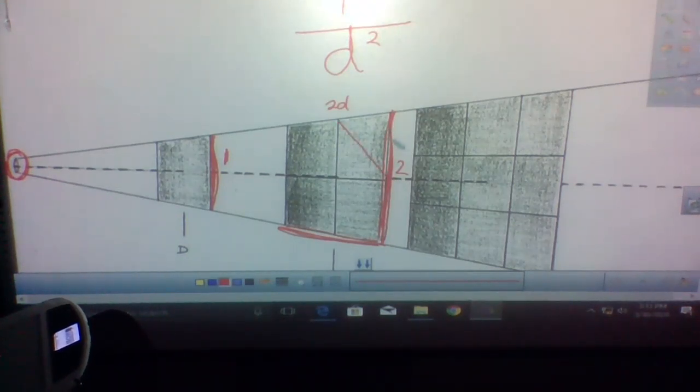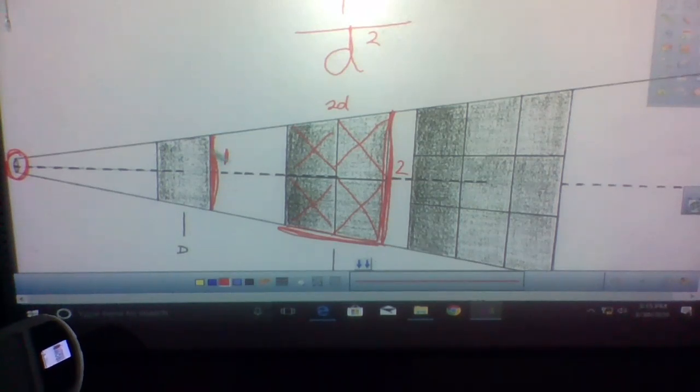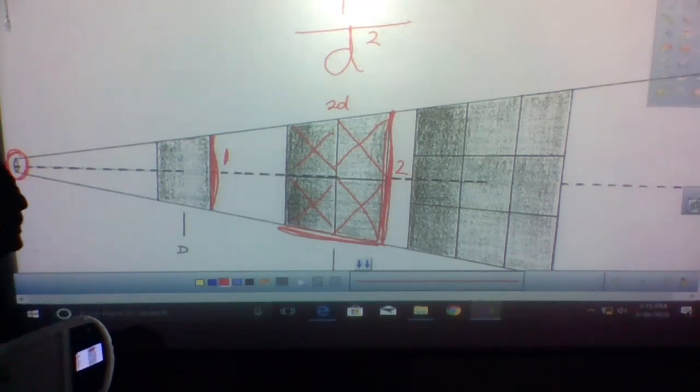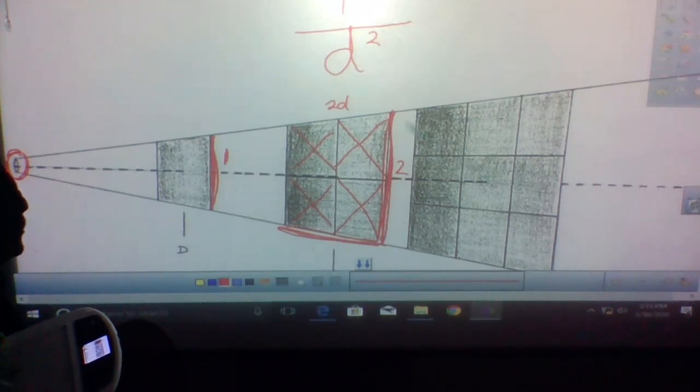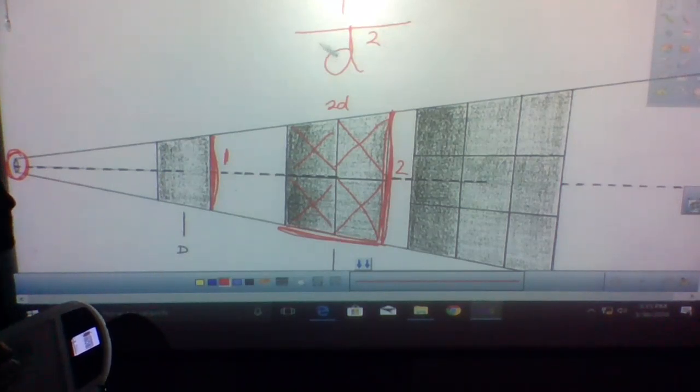It spreads out over this and this, but it spreads out this way. So notice it's spread out over four squares rather than just spread out over one square. So the light is thinner by one-fourth. Now, how did we do that?